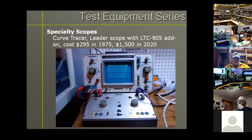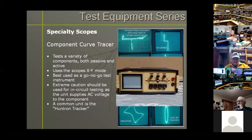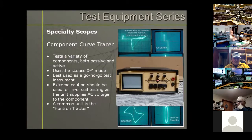On the Tektronix there were 10 curves displayed versus 6 on the Leader — not nearly as comprehensive but look at the price difference. Other specialty scopes include component curve tracers such as the Huntron, which tests capacitors, inductors, and solid state devices but only does two terminals, so you'd display responses like emitter to base and base to collector separately. They were interesting but still rather expensive instruments.